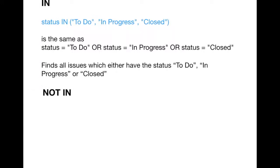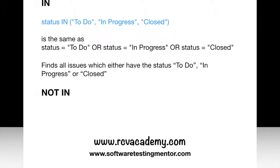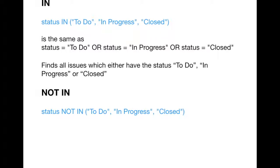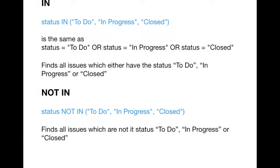The next keyword is NOT IN, which is the reverse of IN. For example, if you're looking for all issues in project ABC which are not in progress or closed, you write: status NOT IN ('In Progress', 'Closed'). This will list all issues that are not in those statuses. That is all about keywords and operators in JQL.